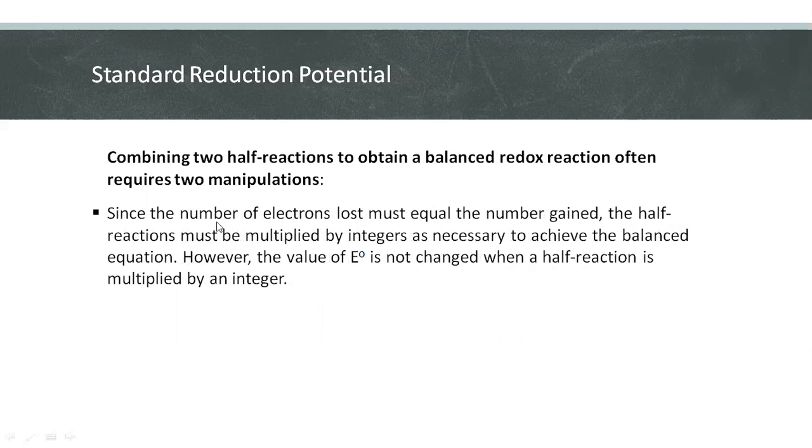Since the number of electrons lost must equal the number gained, the half-reactions must be multiplied by integers. That's necessary to achieve the balanced equation. However, the value of standard reduction potential is not changed when a half-reaction is multiplied by an integer. Since standard reduction potential is an intensive property, it does not depend on how many times the reaction occurs.